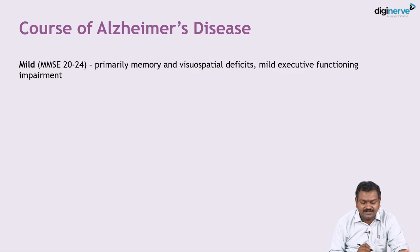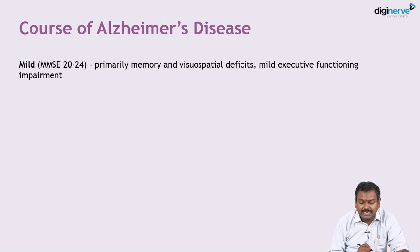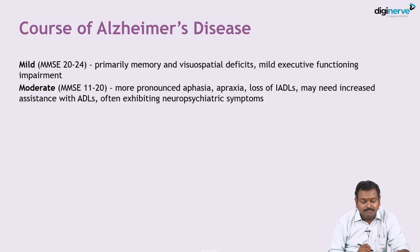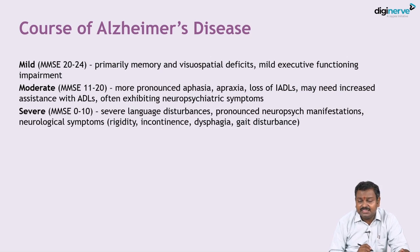In mild disease, the MMSE score is around 20 to 24 out of 30, with primarily memory and visuospatial defects and mild executive functioning impairment. In moderate disease, with MMSE between 11 to 20, patients have aphasia, apraxia, loss of IADLs, may require assistance for ADLs, and neuropsychiatric symptoms begin. In severe disease, with MMSE 0 to 10, there are profound neuropsychiatric manifestations.